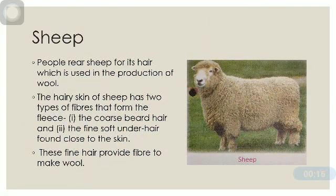First comes sheep. People rear sheep for its hair, which is used in the production of wool. The hairy skin of sheep has two types of fibers that form the fleece, as discussed in the last video: first, the coarse beard hair, and second, the fine soft under hair found close to the skin. These fine hairs provide the fiber to make wool.